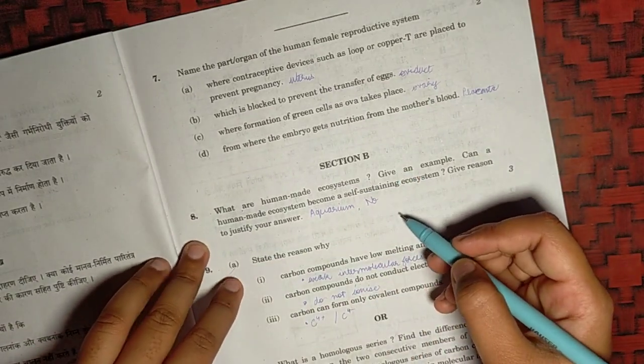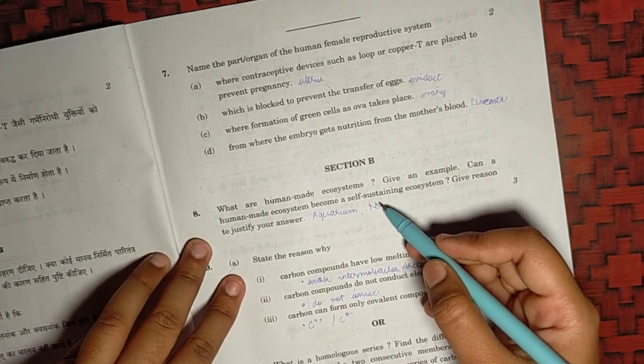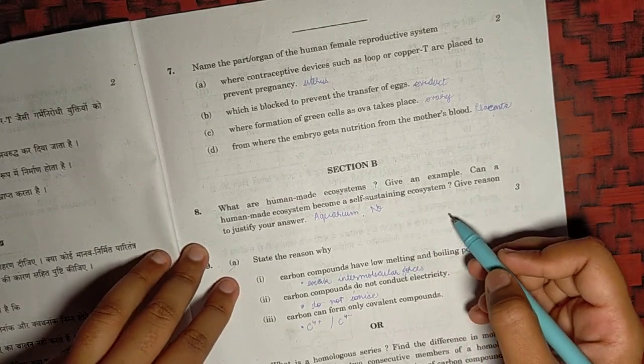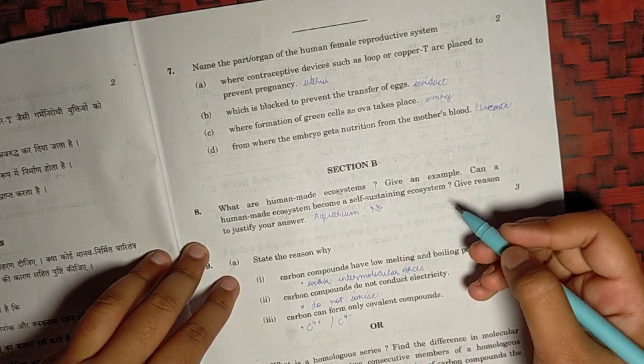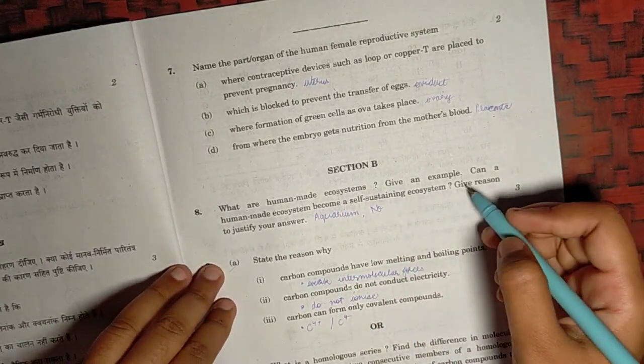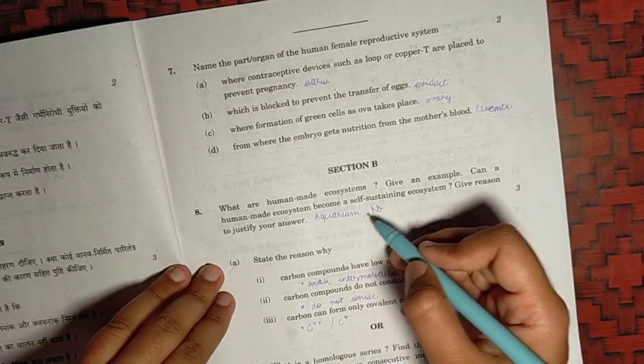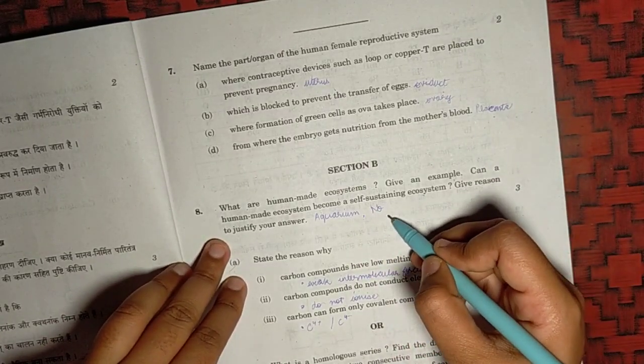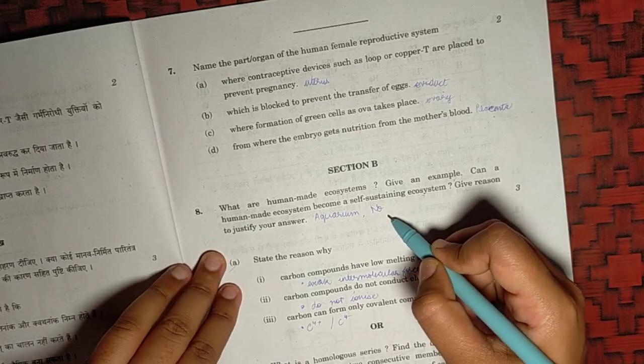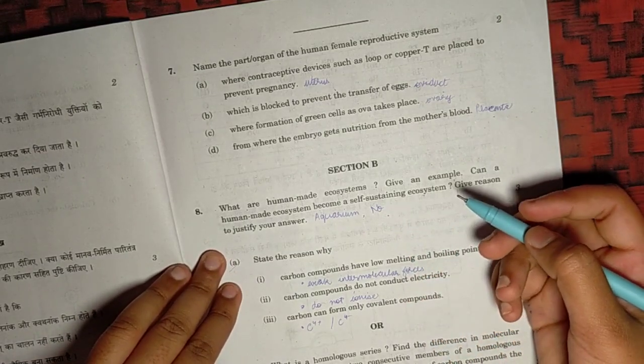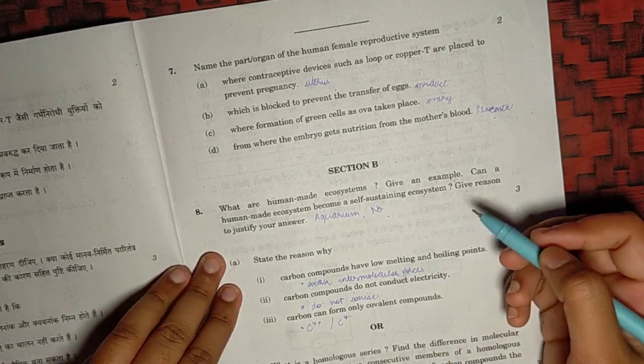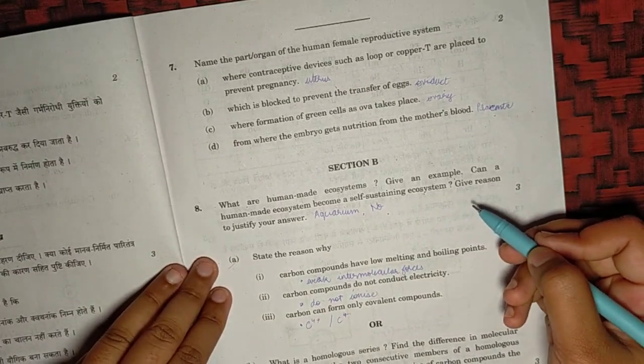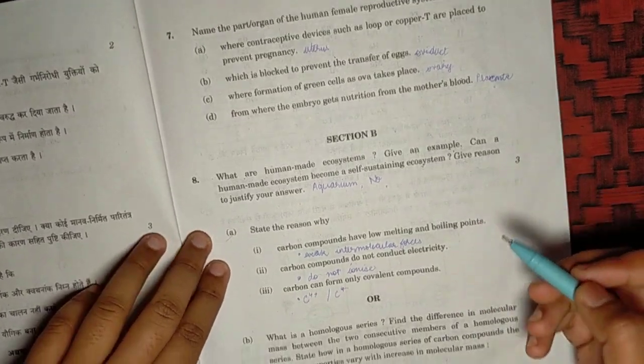For section B, question number 8. Human-made ecosystems are those that are made artificially by human interference. We can even write more about it. And then give an example like aquarium. Then, is it self-sustaining? It is no, because they don't contain various biological pathways like energy flow or the food chain, food web. And they also don't contain decomposers that help to cleanse the environment by themselves.